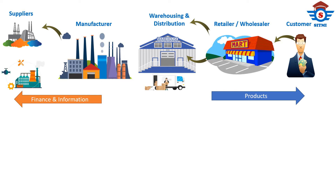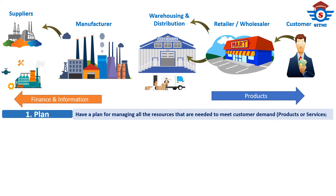The supply chain follows the cycle of Plan, Source, Make, Deliver and Return. Plan means it is important to have a plan for managing all the resources needed to meet customer demand for products or services. Source means choosing reliable suppliers to deliver quality goods and services required for making products.